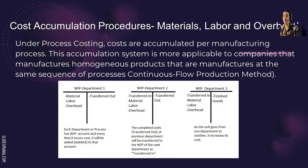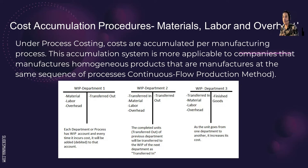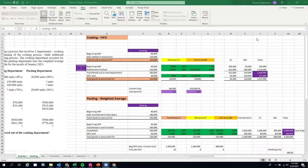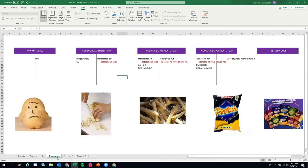There are three departments before we convert raw material into finished goods — cutting, sewing, and packaging. After passing raw materials through cutting, sewing, and finally packaging, only then does it come out as finished goods. Let me share my screen. In all my classes I use Excel as my blackboard, and since we're doing this online, I'll illustrate concepts using Microsoft Excel.